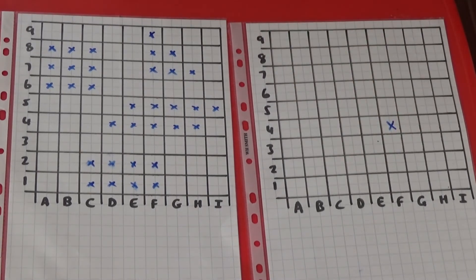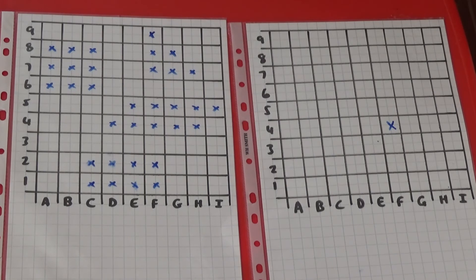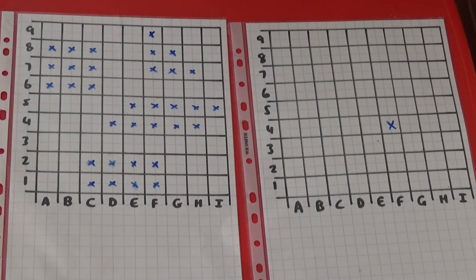If I call out H3, we can see there is nothing on H3. So my partner would call out no. I need to mark this one so I don't call it again.